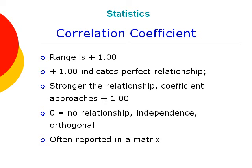The stronger the relationship, the closer the correlation comes to approaching either negative 1 or positive 1. The stronger the correlation, the more pervasive the trend for the two variables to co-vary. When a correlation equals zero, that indicates no relationship, or what we will call a state of independence, or that the two variables are orthogonal, or independent of each other.